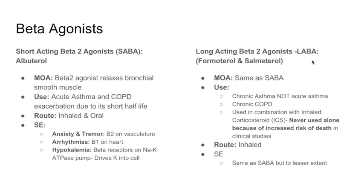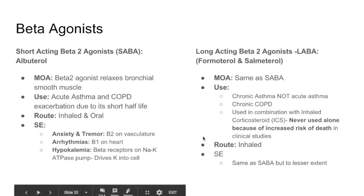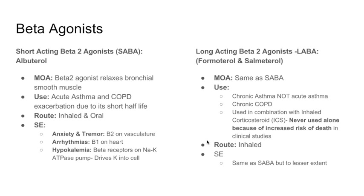Next is long-acting beta-2 agonists (LABA). The prototype is formoterol and salmeterol. The mechanism of action is the same as the SABA. It's used for chronic asthma and COPD — not acute asthma, since we don't need it for acutely deteriorating patients. One important thing to remember: LABAs are always used in combination with inhaled corticosteroids, because when used alone in clinical studies, there was an increased risk of death. These are inhaled medications and have the same side effects as SABAs, but to a lesser extent.